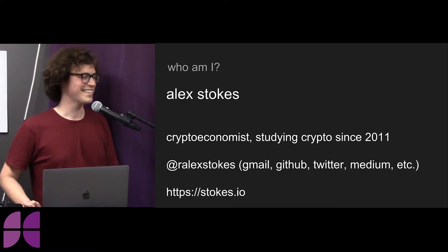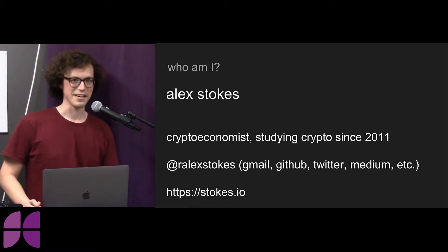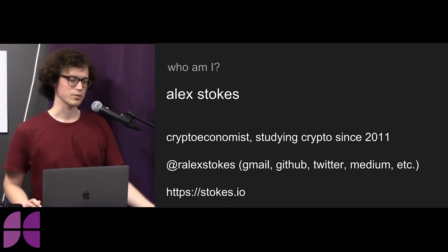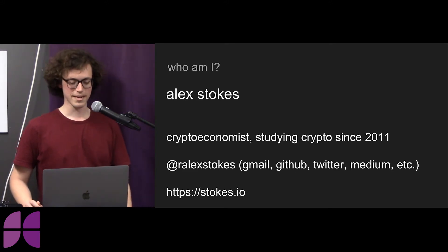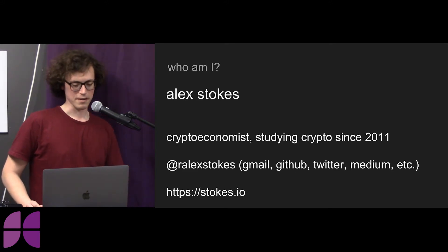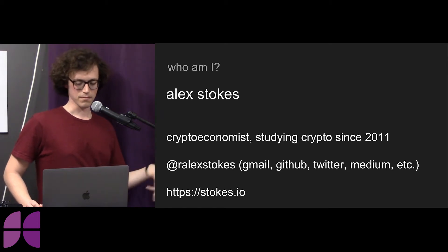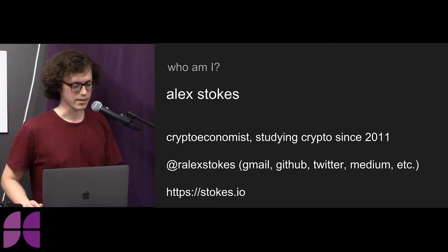So who am I? My name's Alex Stokes. I like to call myself a crypto economist. I've been studying it since like 2011, so many years now. You can find me at ralextokes — that's my email, GitHub, all the stuff. I have a website at stokes.io.